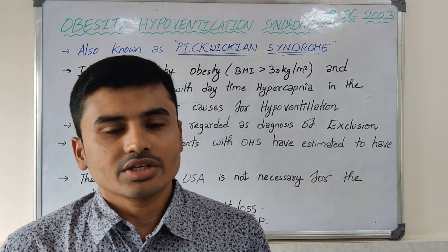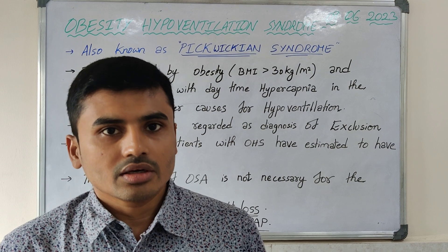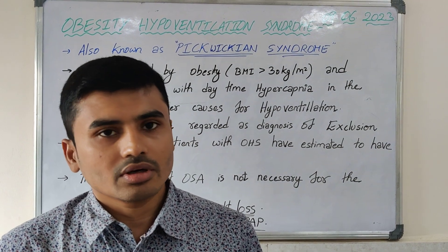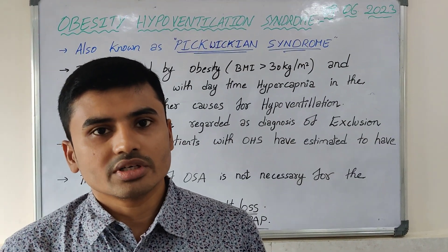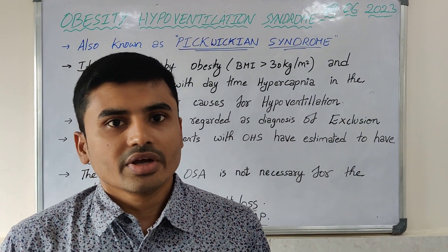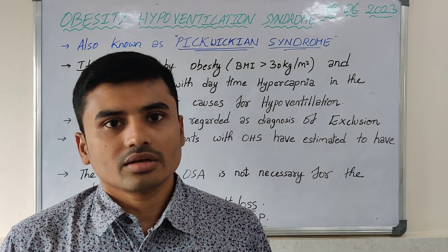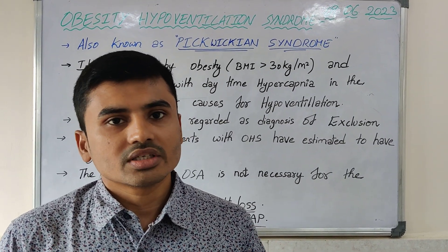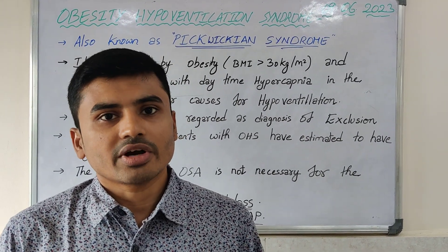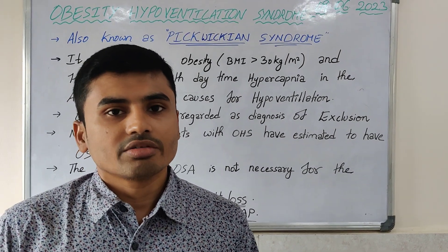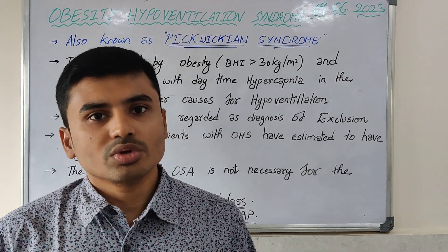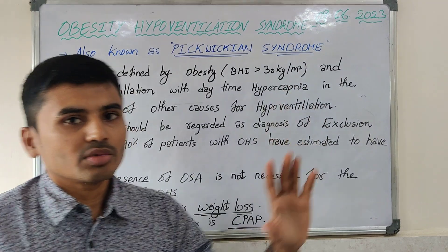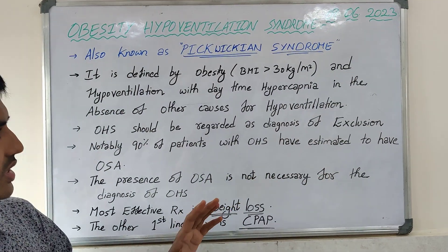Other causes to be excluded include severe ILD (interstitial lung disease), any other causes of hypoxia like severe hypothyroidism, neuromuscular diseases, and usage of narcotics. All such causes of hypoventilation should be ruled out. These are the formal diagnostic criteria.